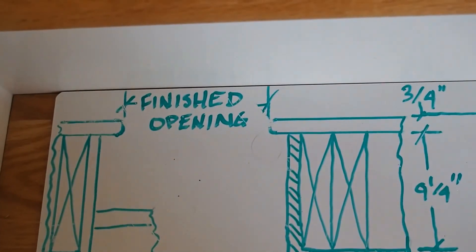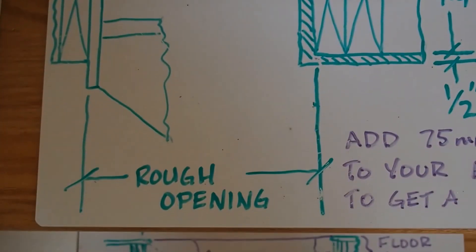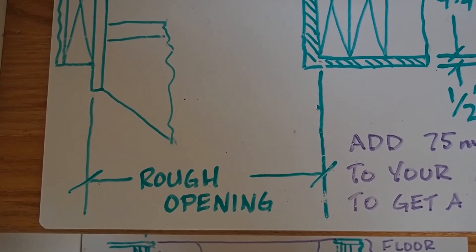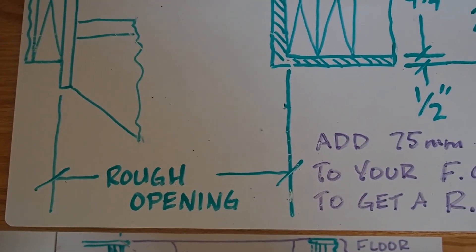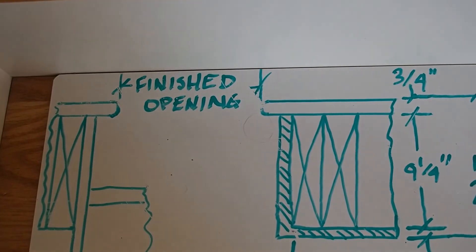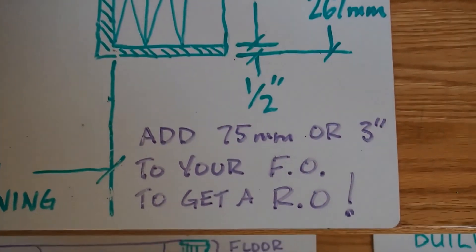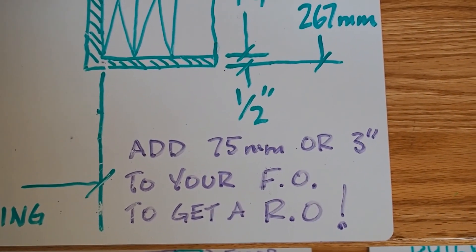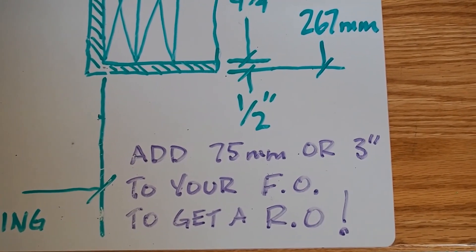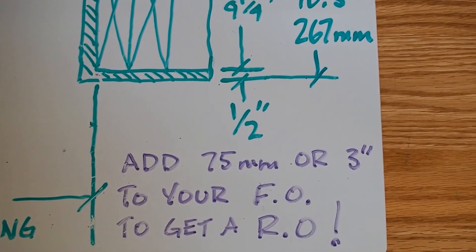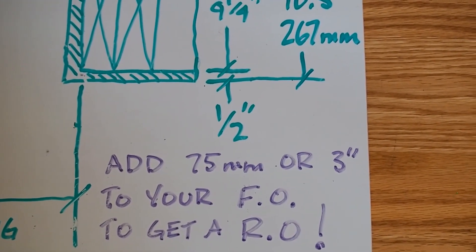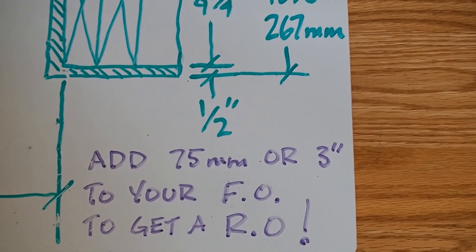It's the rough opening we're interested in. You'll also note that the finished opening is smaller than the rough opening. For that reason, when we calculate the finished opening using similar triangles, you're going to need to remember to add 75 millimeters or three inches to your finished opening to get a number for your rough opening. Most common mistake with this calculation is to forget this final step.